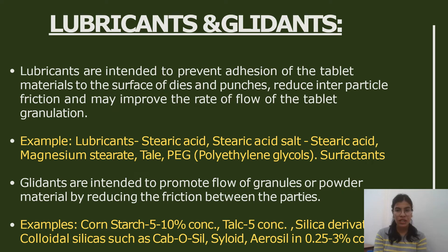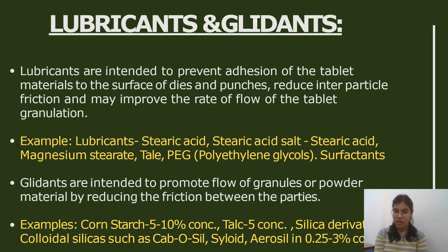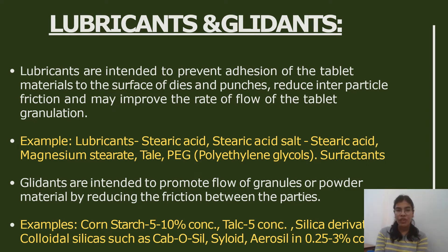Glidants are intended to promote the flow of granules or powder material by reducing the friction between particles. Examples of glidants include corn starch, talc, silica derivatives, and colloidal silica (Aerosil) at 0.25% concentration.